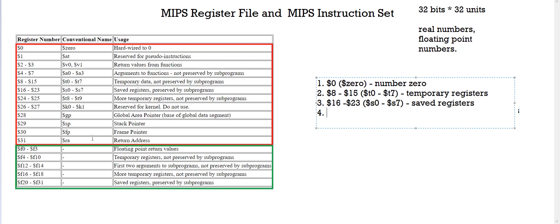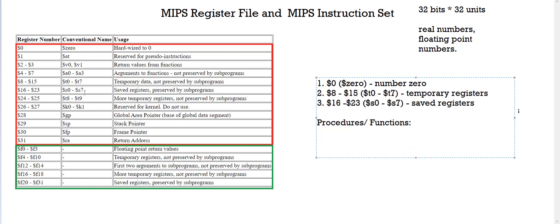These are the basic registers we're going to need. The ones I'm going to describe now deal mainly with procedures and functions. If you take a look at register 2 and register 3, they store return values from functions. Whenever a caller calls another function and wants to return something back — say the result of an operation — you have to store the result in either register v0 or register v1 for it to be returned properly in MIPS code. Registers 2 and 3 are conventionally called v0 and v1.